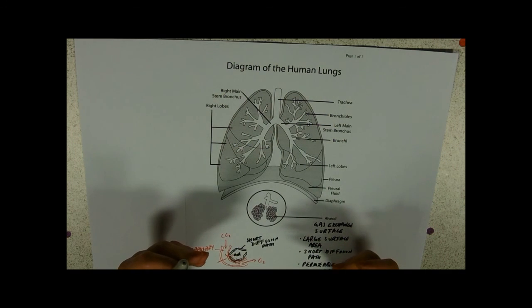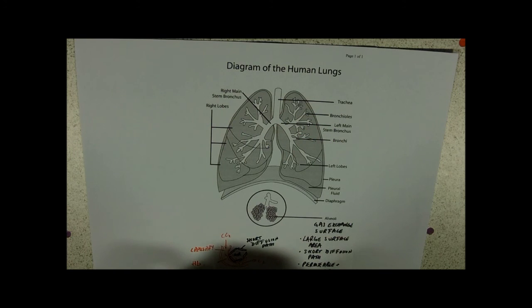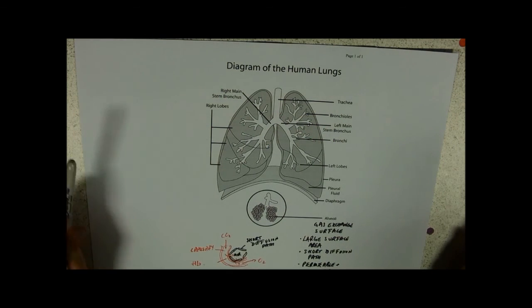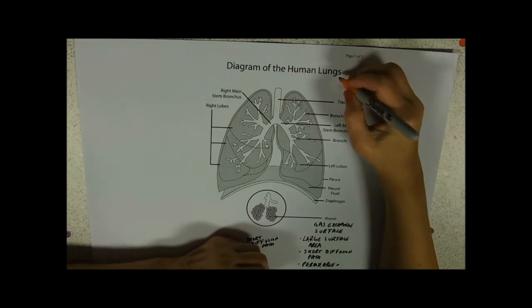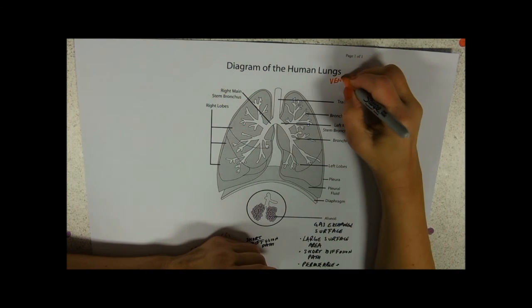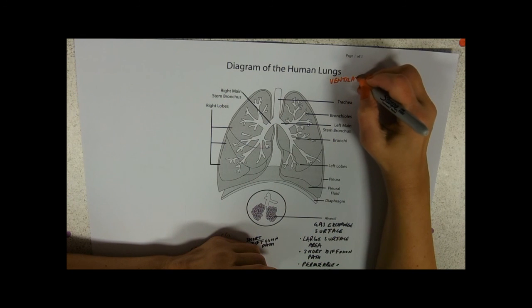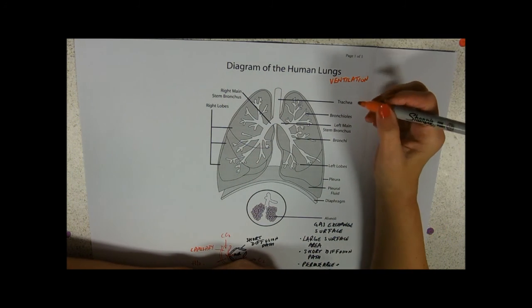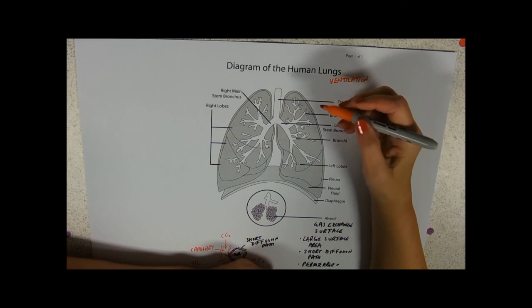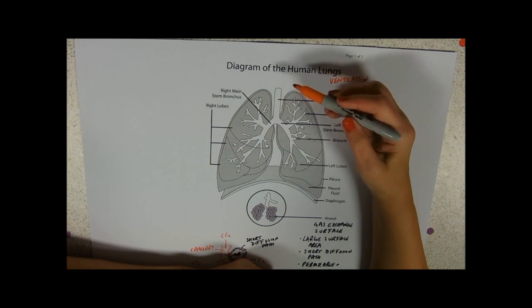That's the gas exchange surface. But to get there and to maintain a concentration gradient, we also have a ventilation system. It's effectively getting down a load of pipework where nothing too much is happening to the gases. There's no gas exchange.